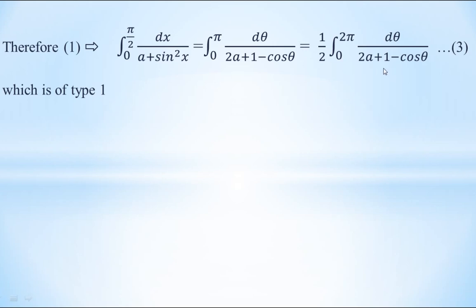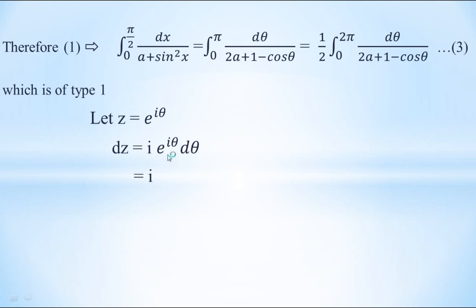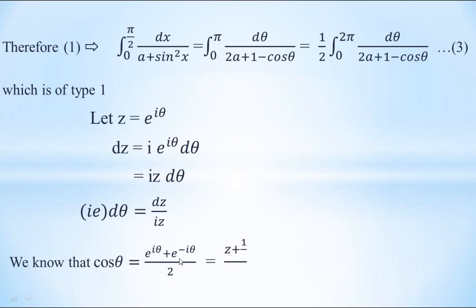Substitute z = e^(iθ). Differentiating both sides: dz = e^(iθ) · i · dθ = iz dθ, so dθ = dz / (iz). Also, cos θ = (e^(iθ) + e^(−iθ)) / 2 = (z + 1/z) / 2. Taking LCM in the numerator, we get cos θ = (z² + 1) / (2z).